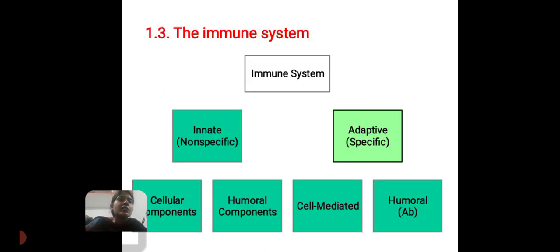Next, the Immune System. There are two types of immune system: innate immune system and adaptive immune system. The innate immune system is further divided into two types: cellular component and humoral component. The adaptive immune system is further divided into two types: cell-mediated immune system and humoral immune system.